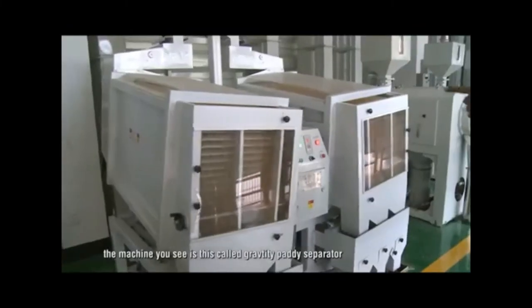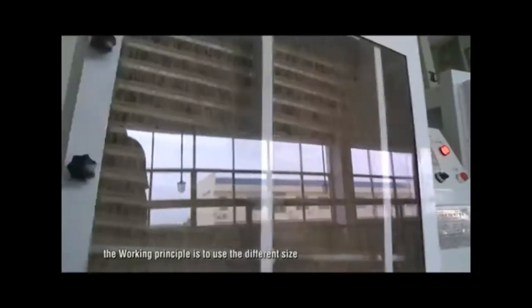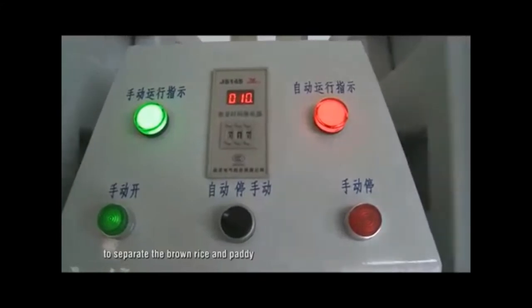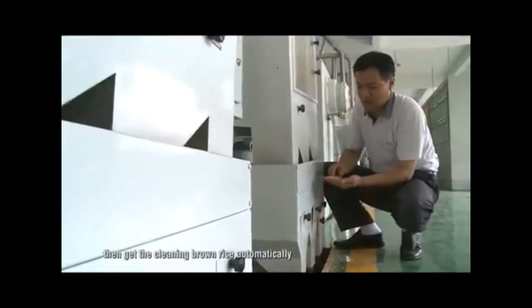The machine you see is called gravity paddy separator. The working principle is to use the different size and proportion of husked rice to separate the brown rice and the paddy, then get the clean brown rice automatically.